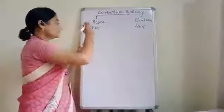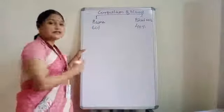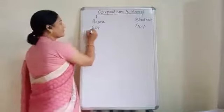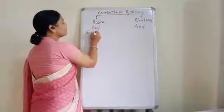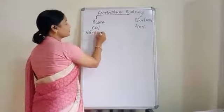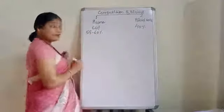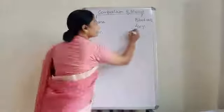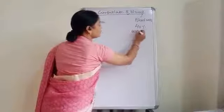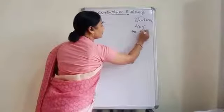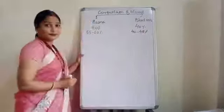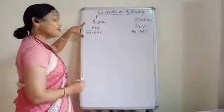Somewhere it is written that plasma may be 55 to 60%, in which case the blood cells will be from 40 to 45%.